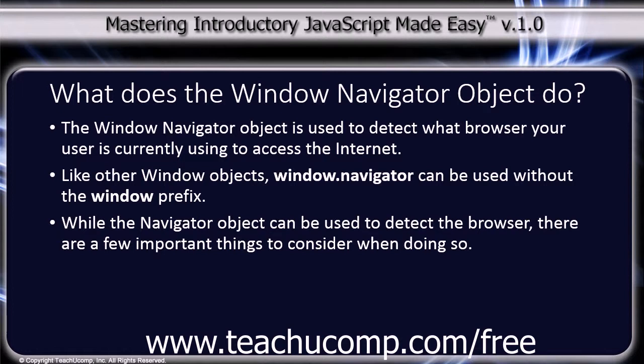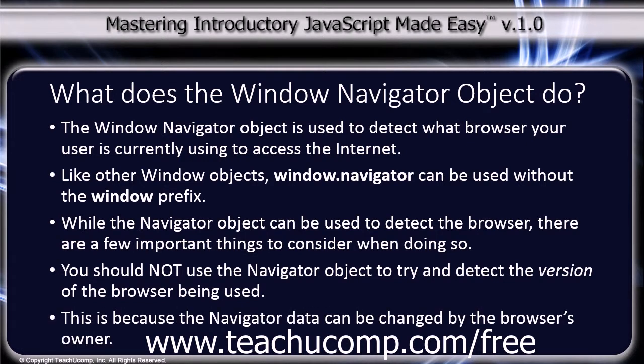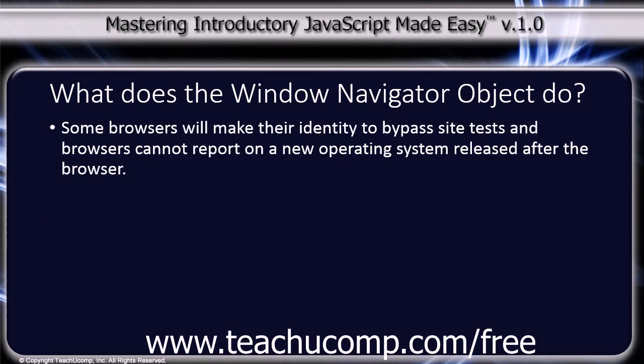While the Navigator object can be used to detect the browser, there are a few important things to consider when doing so. You should not use the Navigator object to try and detect what version of the browser is being used. This is because the Navigator data can be changed by the browser's owner. Some browsers will mask their identity to bypass site tests, and browsers cannot report on a new operating system that was released after the browser.